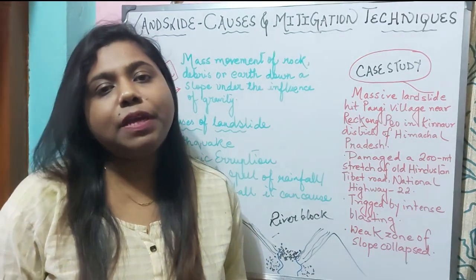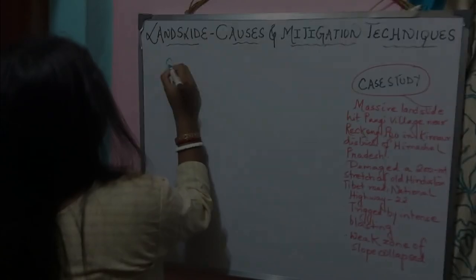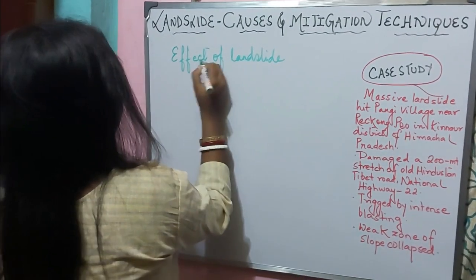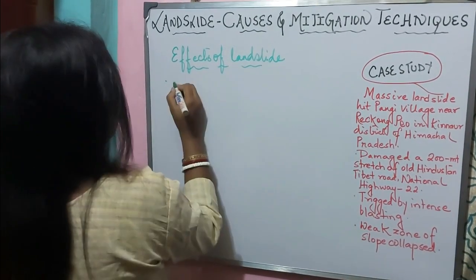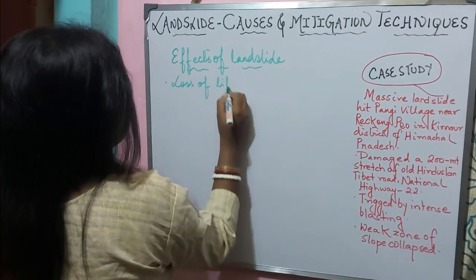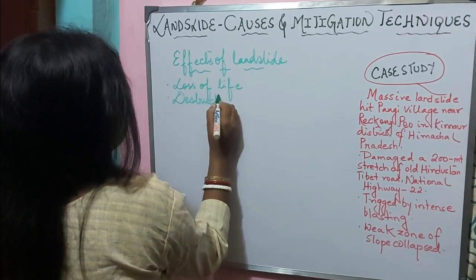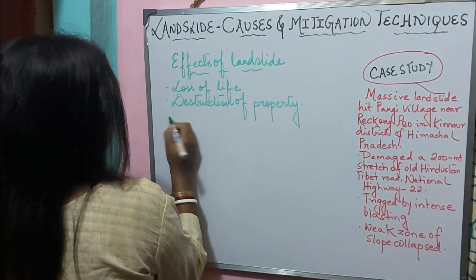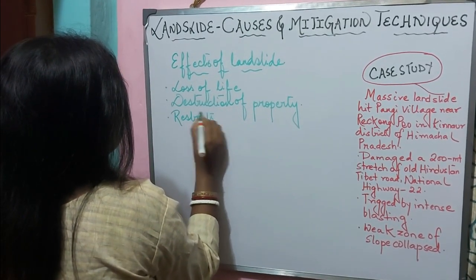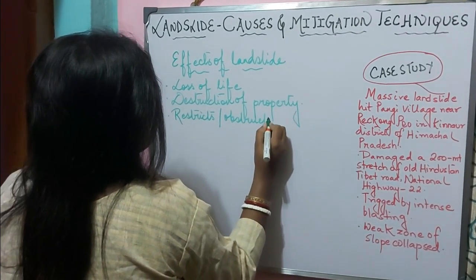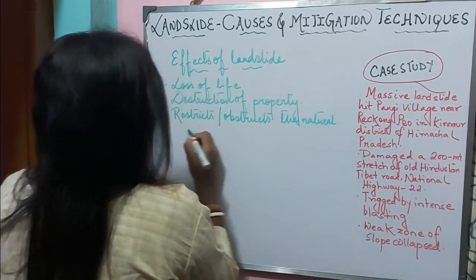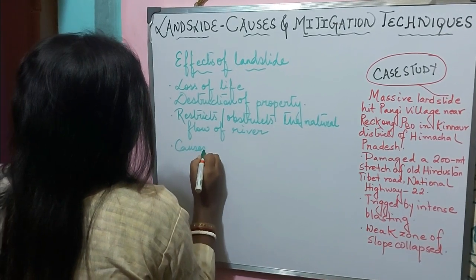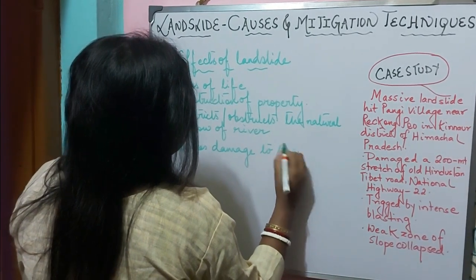Now let us see what are the effects of landslide. Number one: it causes a huge loss of life and destruction of property, whether private or government. It restricts or obstructs the natural flow of rivers, and it causes damage to the beauty of the landscape.